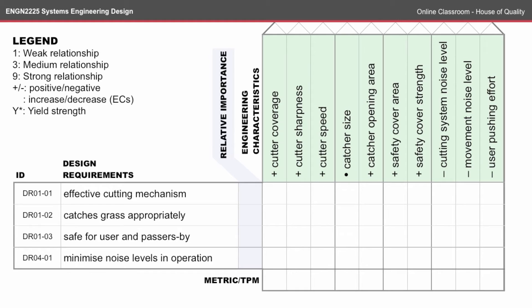I've put in the relative importance that I've come up with — perhaps from a separate pairwise analysis — and you'll notice these aren't the same numbers from the previous pairwise online classroom, because we were looking at broader customer requirements rather than the design requirements listed here. I've decided: safe for users and passers-by is number one, effective cutting mechanism is number two, minimise noise level in operation is number three, and catch grass appropriately is number four.